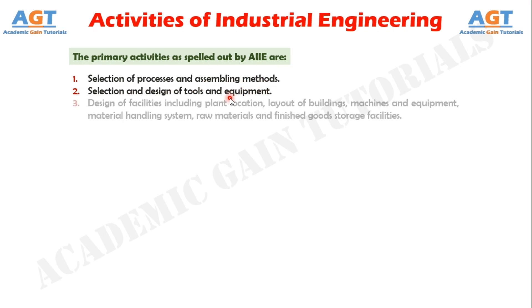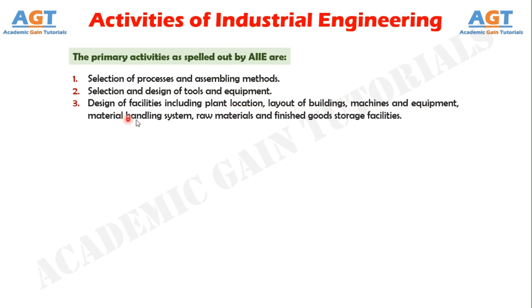Number three, design of facilities including plant location, layout of buildings, machines and equipment, material handling system, raw materials and finished goods storage facilities.